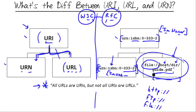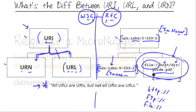So there you have it, friends. This is an abridged Cliff Notes definition of the distinction among URI, URN, and URL terms. I hope that this has been informative for you, and I'd like to thank you for viewing.